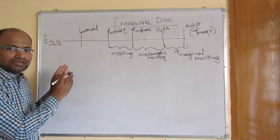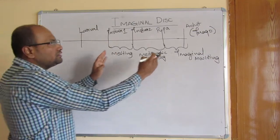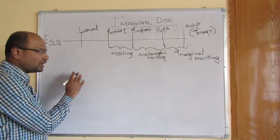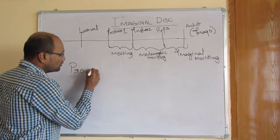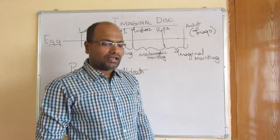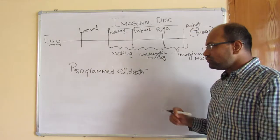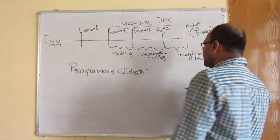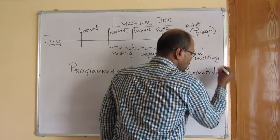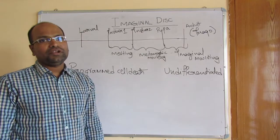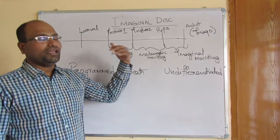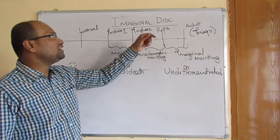What exactly happens to the cells present in the larva and how do cells arise in the adult structure? The cells present in the larva undergo programmed cell death. At the same time, there are cells hidden in the larval stages — undifferentiated cells — and these undifferentiated cells develop into adult structures. These undifferentiated cells are already present in the larval organism, and they are nothing but the imaginal disc cells.